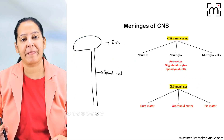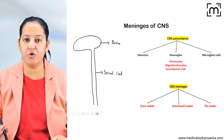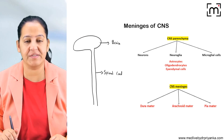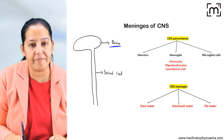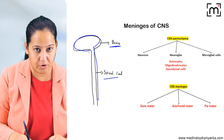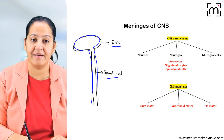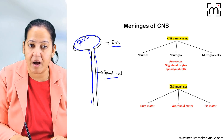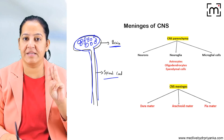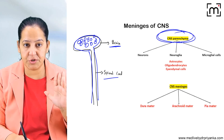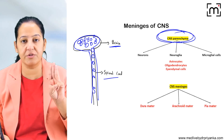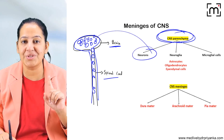Before we start brain tumours, you must understand the structure of the central nervous system. The CNS has the brain and the spinal cord. The brain and the spinal cord are made up of parenchyma, and the parenchyma is made up of cells. There are three types of cells that constitute the parenchyma of the brain and spinal cord. The most common cells are the neurons, which do signal transmission, so tumours can occur in the neurons as well.